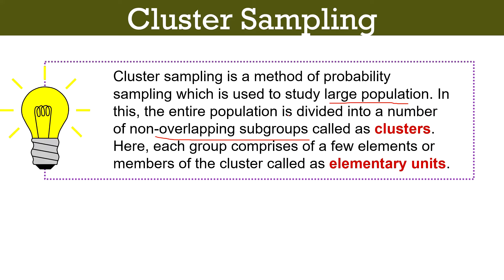In cluster sampling, rather than selecting individual units from the population, we select entire groups or clusters randomly that possess heterogeneous characteristics. Each cluster roughly represents the entire population because it contains a wide range of elements that are good representatives of the population. In other words, each cluster is a mini representation of the entire population. The selection criterion is based on the ease of availability of requisite data.